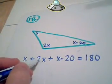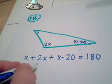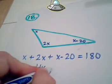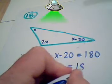So now we're going to collect like terms. Let's see, I have 1, 2, I have 4x minus 20 is equal to 180.